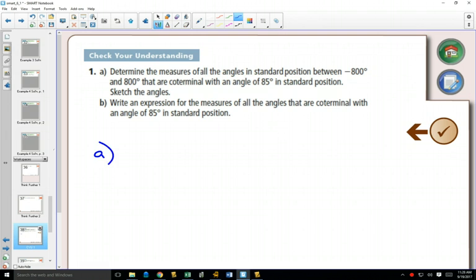So, 85° in standard position starts here and would end there. So, if we wanted to write all the angles that are coterminal with that, we can add or subtract 360° as many times as we like.